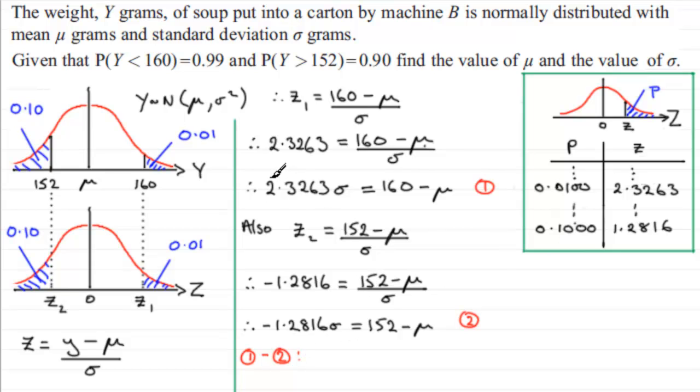So, we're going to have 2.3263 sigma minus minus 1.2816 sigma. So in other words, we end up adding these two values. And if you do that, you'll find you get 3.6079 sigma. And then you've got 160 minus 152, so that's equal to 8. Divide both sides by 3.6079 and you'll end up with, therefore, sigma equals 2.2173 and so on.